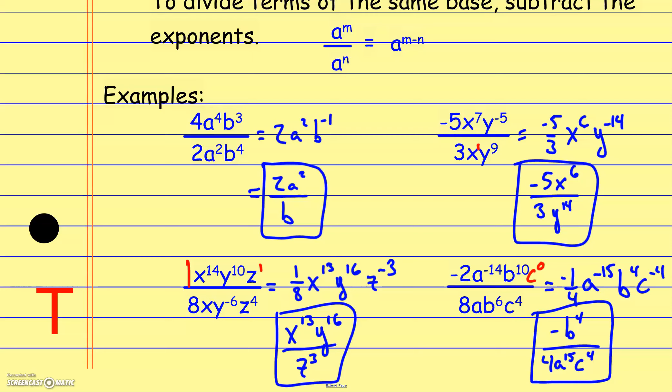To summarize the rules of exponents: anything to the zero power is 1; a negative exponent flips to the other side of the fraction bar; multiplying two terms with the same base means adding the exponents; dividing means subtracting the exponents; and raising to a power means multiplying the exponents.